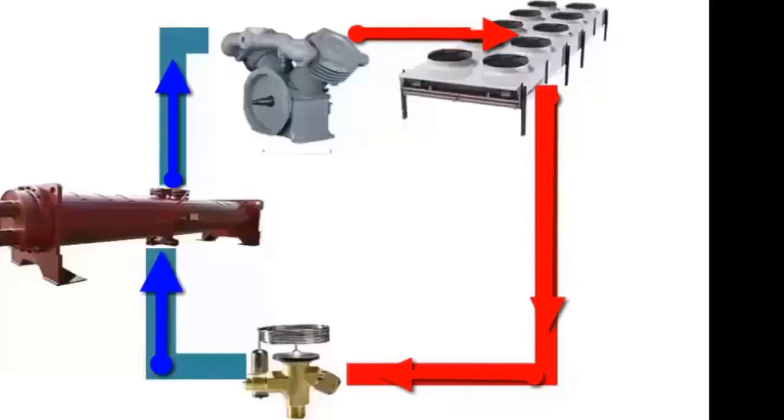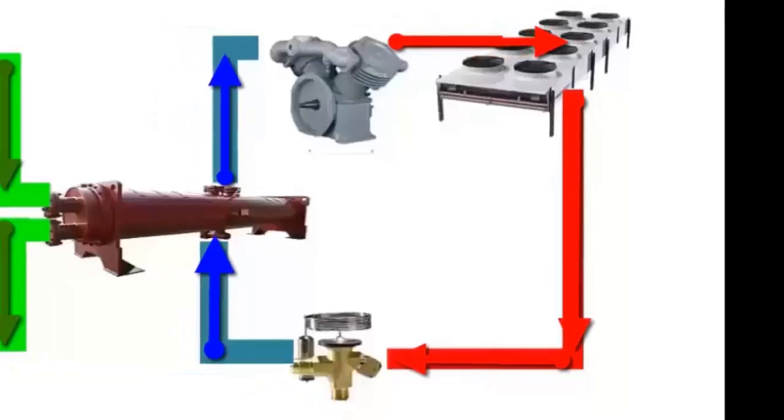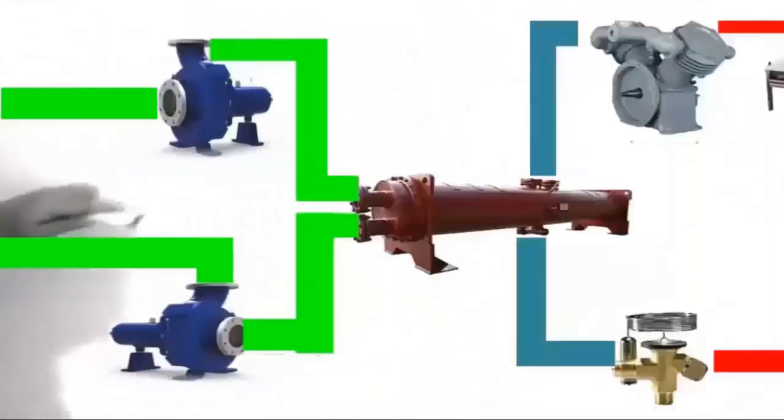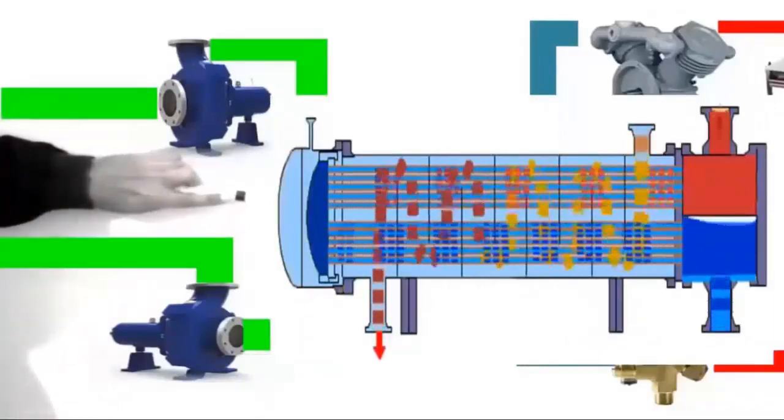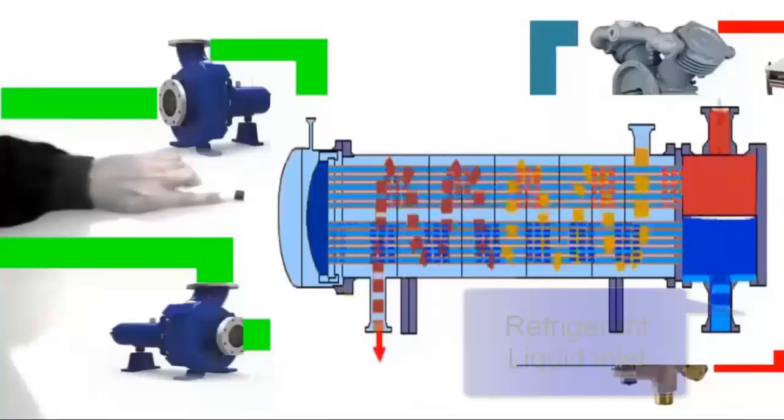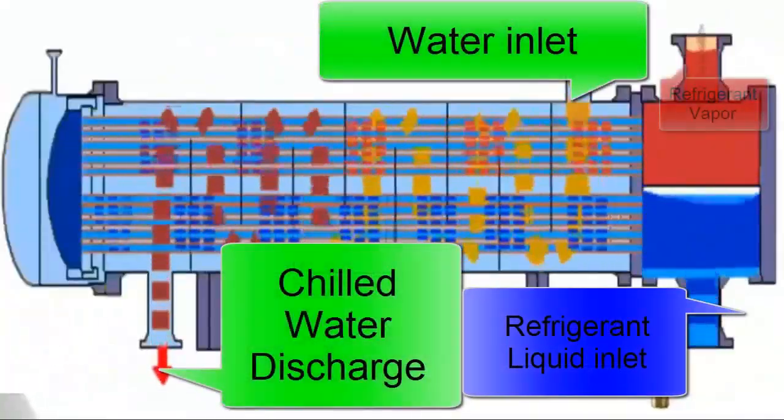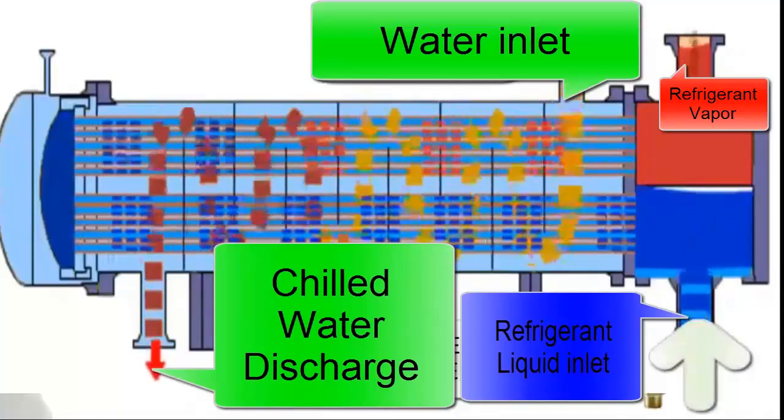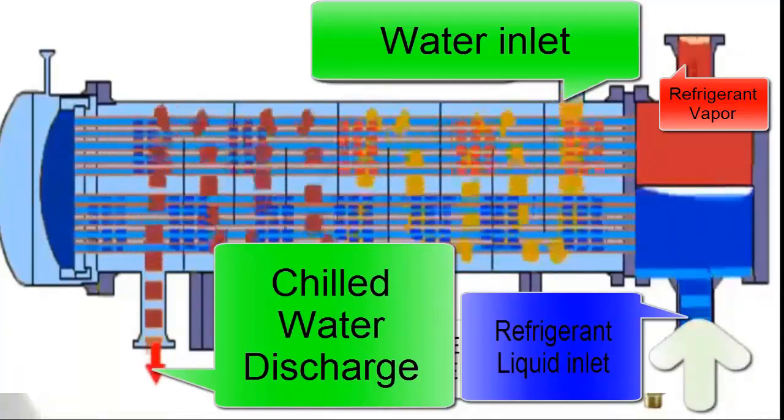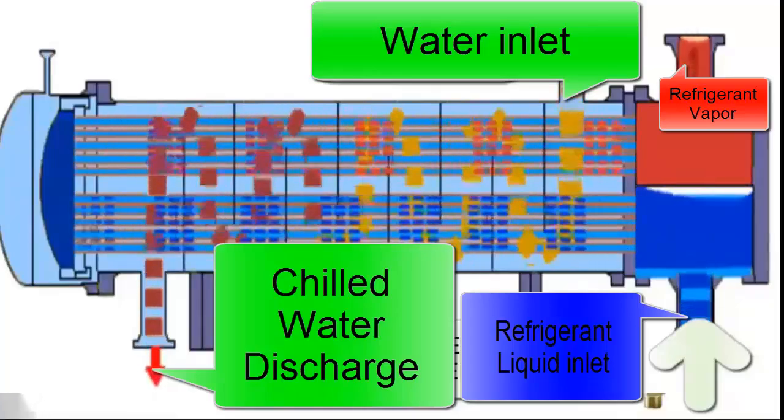The evaporator, on the other hand, is the component where thermal exchange with the water occurs. At this point in the system, the refrigerant, initially in a liquid state, absorbs heat from the water, changing its state to vapor. This state change is a crucial aspect of the refrigeration process, as it is the means by which heat is removed from the water.